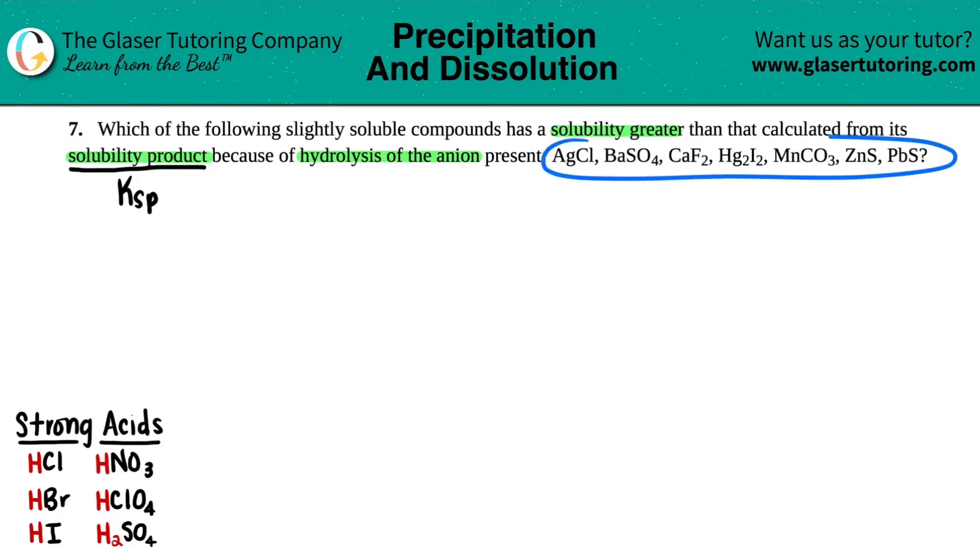The breakdown between all these anions and the cations—the ions—are very slim to nothing, mainly because a Ksp has such a low value. But now they're saying that hydrolysis of an anion is present.